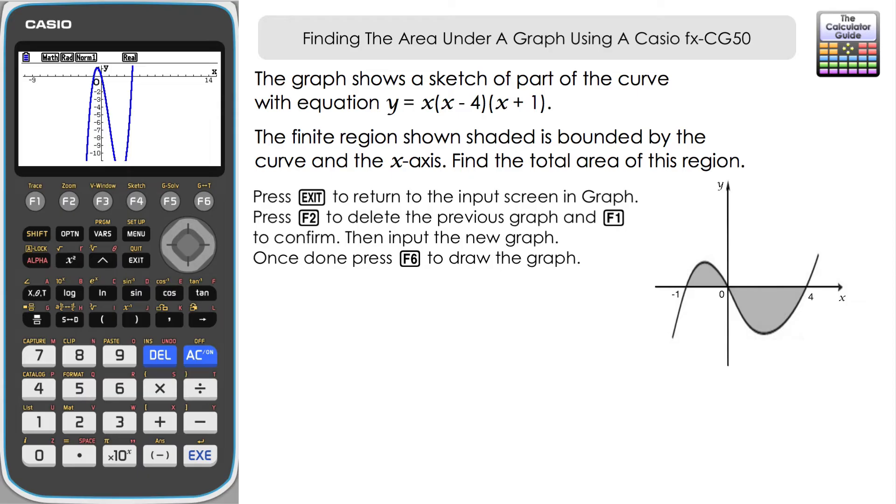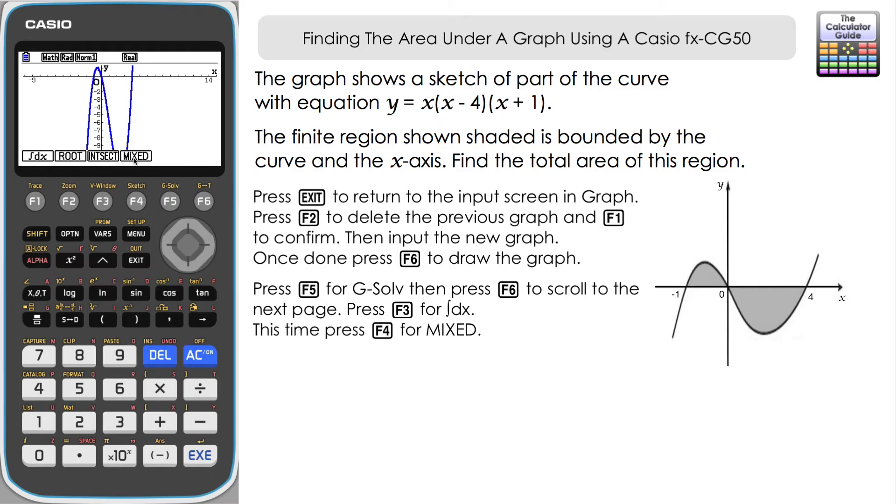So we want this region here at the top and this region included as part of the area that we need to find in the question. So let's go back to our integration feature, so it's F5 for G-Solve, F6 to go to the next page, and then the integration feature. Now on this screen what we're going to select is F4 for Mixed, because we've got some above the x-axis and some below the x-axis, so press F4.